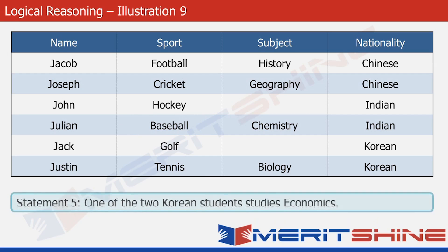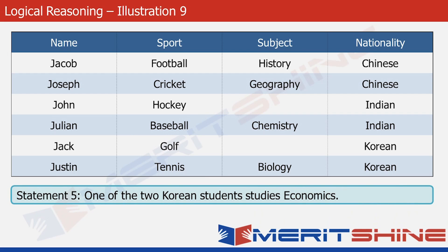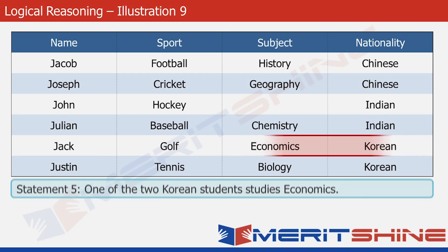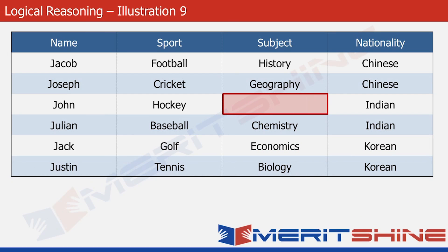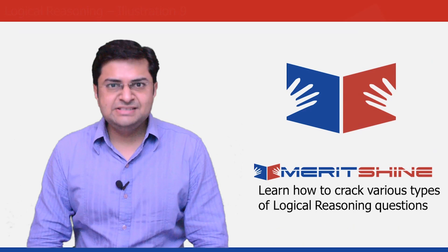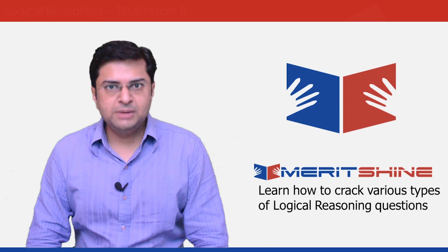Our next statement is statement five. It says that one of the two Korean students studies economics. The subject cell is vacant in Jack's row, so let's write economics there. Now the last cell left in the subject column has only one subject remaining — math. So let's write math there. And with this we complete our table. We arrived at the solution quite easily by following the optimal order of statements.